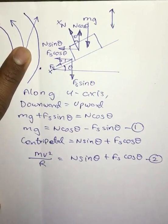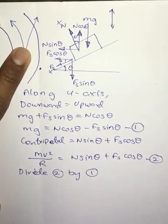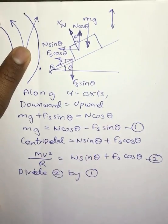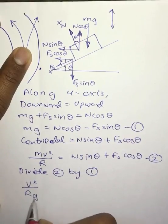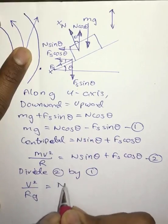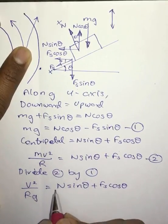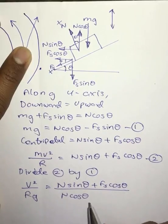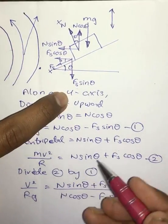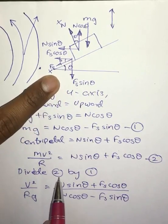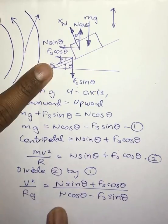We will now divide equation two by equation one. After dividing, we get: v²/rg = (N sinθ + Fs cosθ) / (N cosθ − Fs sinθ). You can verify this yourself, but I am directly writing the equation after dividing equation two by equation one.